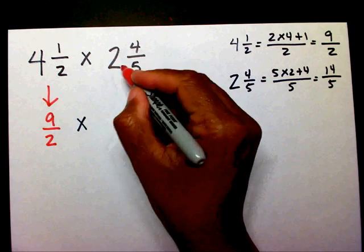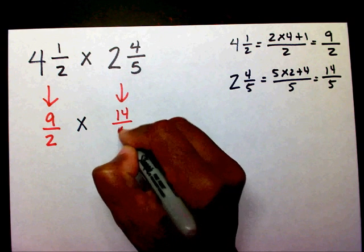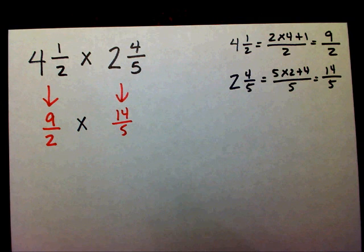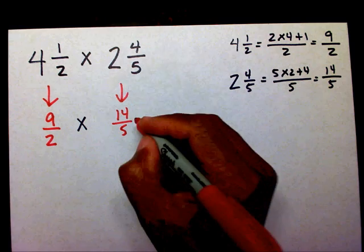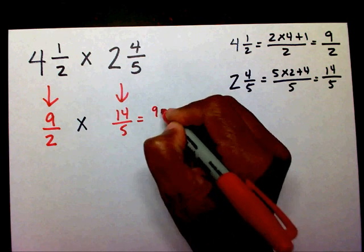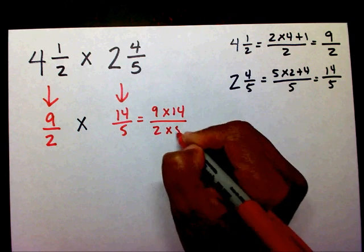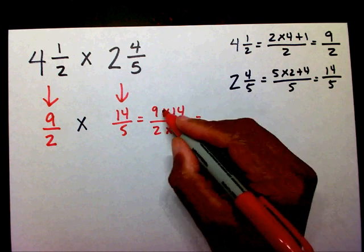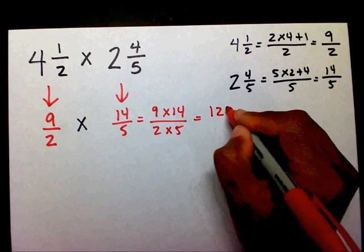So instead of two and four-fifths, I can write fourteen-fifths. Now I need to multiply across — nine times fourteen and two times five. Fourteen times nine is one hundred and twenty-six, and two times five is ten.